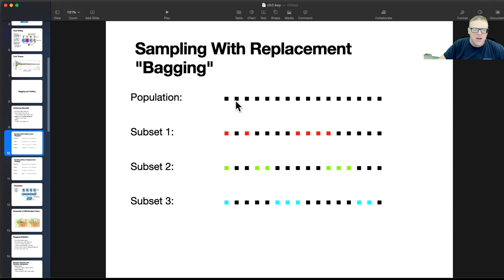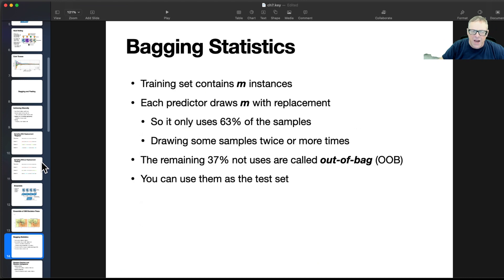So if you go back here, sampling with replacement means I draw one, then I draw again from the entire set, then again from the entire set without remembering which one I've drawn before. So I might draw the same one twice. That's the point. So I'm going to throw these slides away and remake them. It's not really an issue across multiple sets. It's an issue of how you make the one set. All right, so if your training set contains M instances, and each predictor draws M with replacement, then it only uses 63% of the samples. So there are 37% it does not use, and that's what I'm saying. Therefore, it must have drawn some of the others twice, and those are called out of bag, so you can use them as the test set if you like.